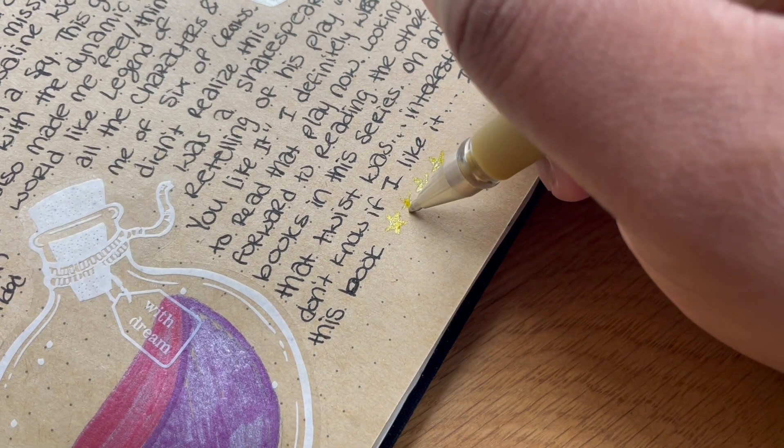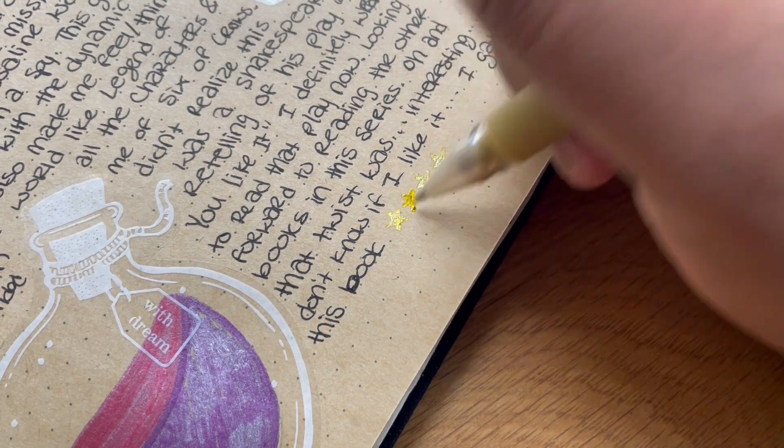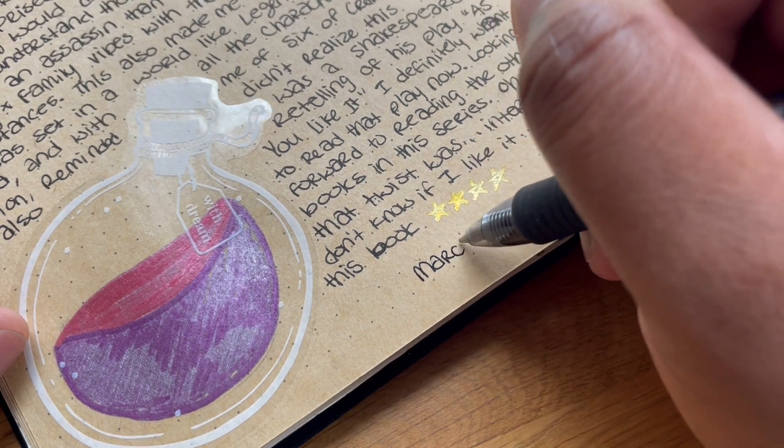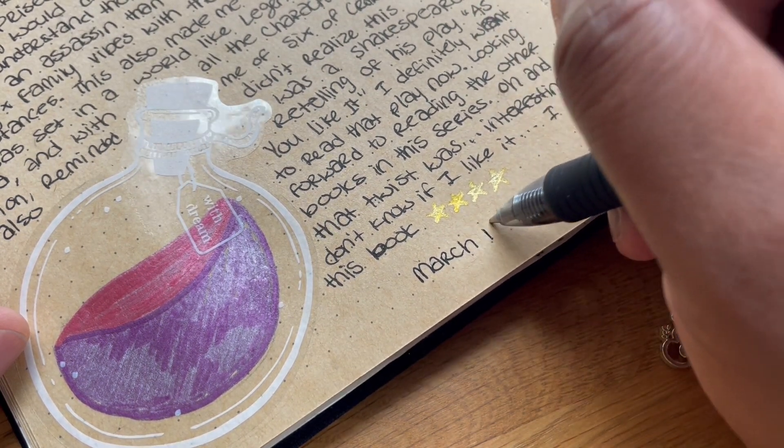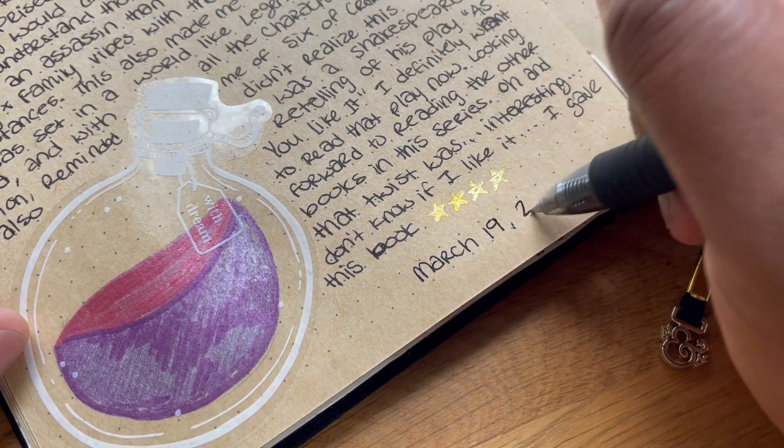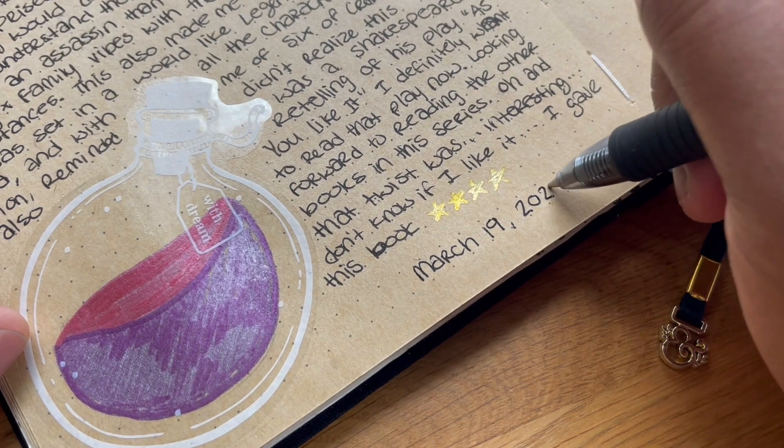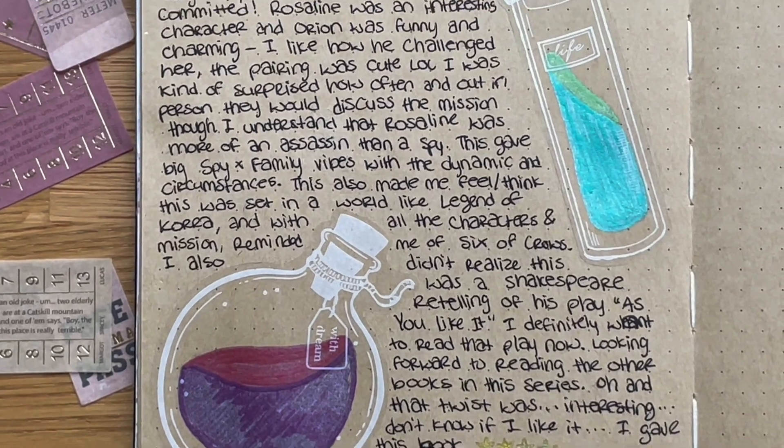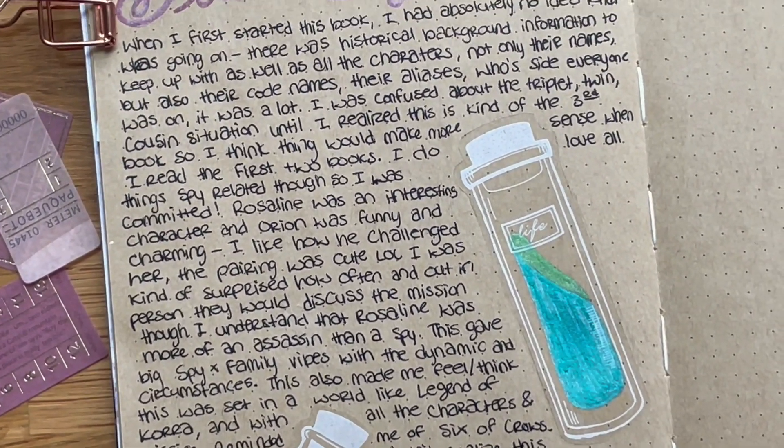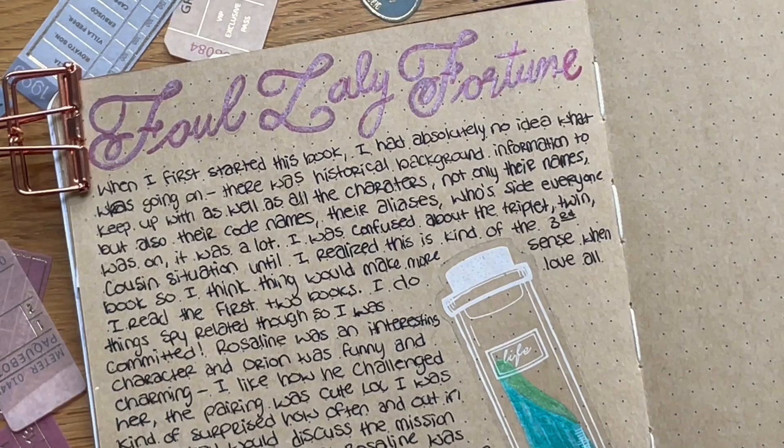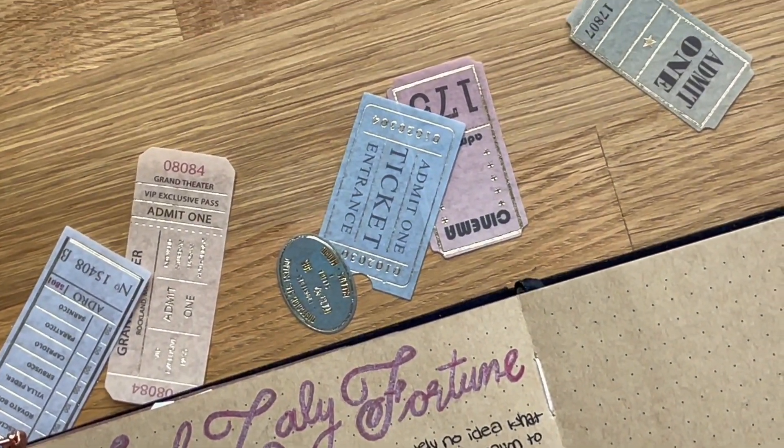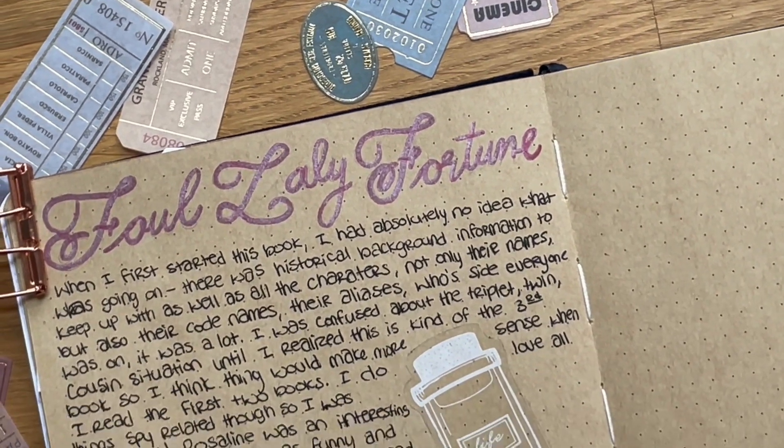Also, apparently this was a retelling of Shakespeare's play As You Like It, which I personally have never read or even heard about. But once I found that out and I read the little synopsis, I definitely see the similarities, specifically with the names of course, but the story, I can see some little similarities there as well. Overall, I gave this book four stars. I really liked Rosalyn's character, I thought she was interesting, I thought Orion was funny and charming, and the little twists and turns - and I honestly cannot wait for the next book.